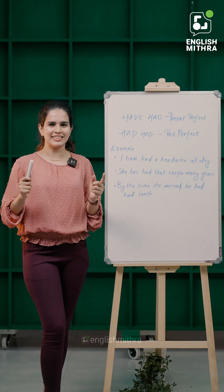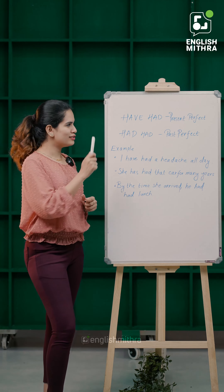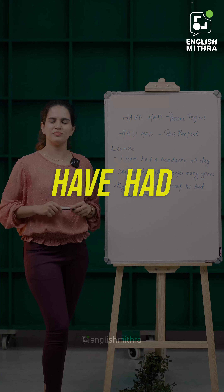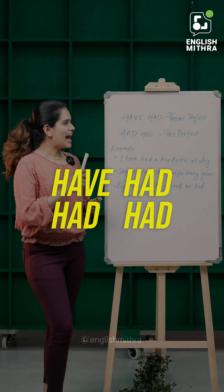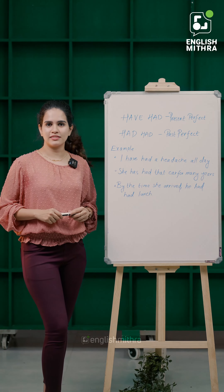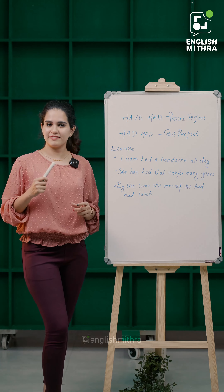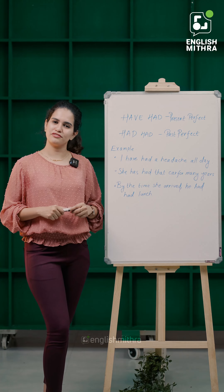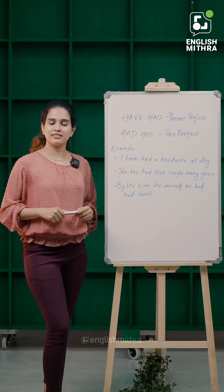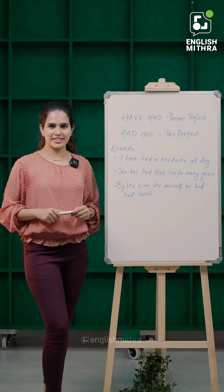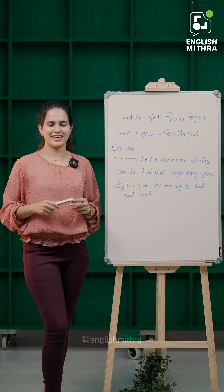We will start with two things. One is 'have had' and 'had had'. 'Have had' is present perfect tense, not a phrase. 'Had had' is past perfect tense, not a phrase.